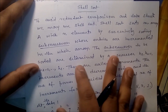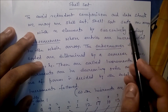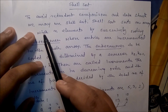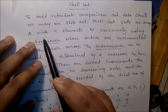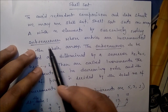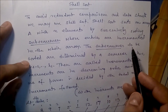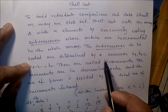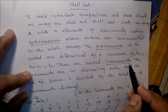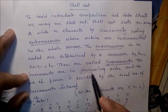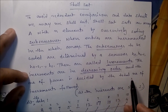To avoid redundant comparisons and data structure overhead, we may use Shell Sort. Shell Sort sorts an array of n elements by successively sorting subsequences whose entries are incremented across the whole array. The subsequences to be sorted are determined by a sequence ht, ht-1, ht-2, down to h1. These are called increments. The increments are in decreasing order, and the number of passes is decided by the total number of increments.